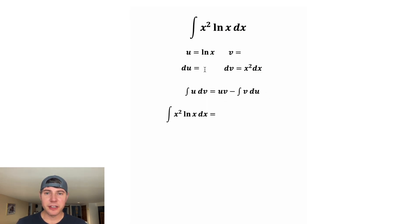And then to fill out the rest of this, we need to find v and du. So du is the derivative of u, and the derivative of ln of x is 1 over x dx.